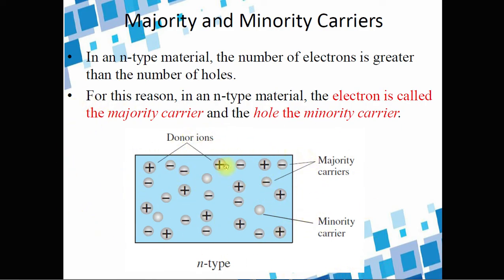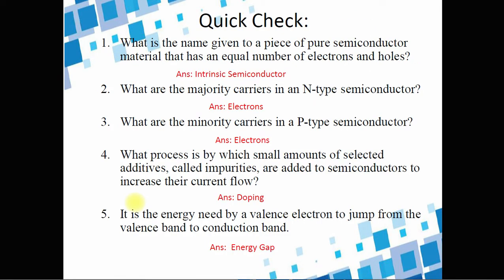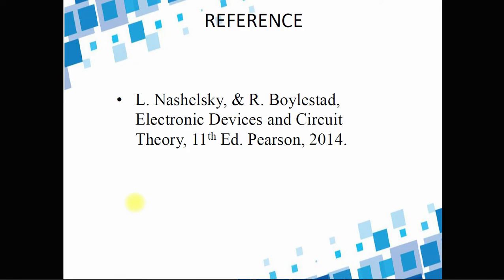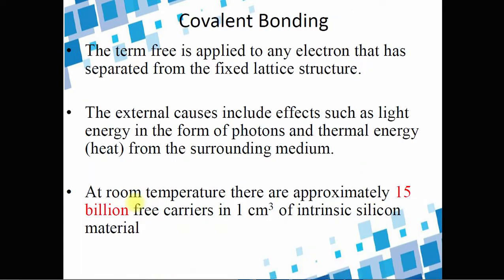In a P-type material, the majority carriers are holes and the minority carriers are the electrons. For P-type, we add a trivalent atom with three valence electrons to pure silicon. One silicon electron has nothing to share, resulting in a vacancy called a hole. When we dope pure silicon with trivalent atoms, we call it a P-type material, and the majority carriers are the holes. Diffused impurities with three valence electrons are called acceptor atoms. Our reference is Electronic Devices by Boylestad and Nashelsky. Thank you for listening — this is Engineer Abad, God bless.